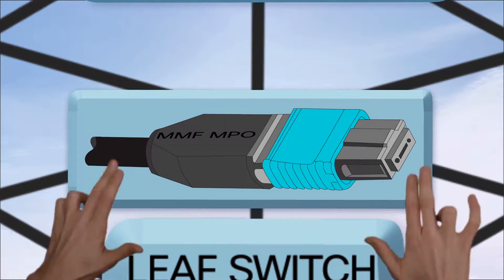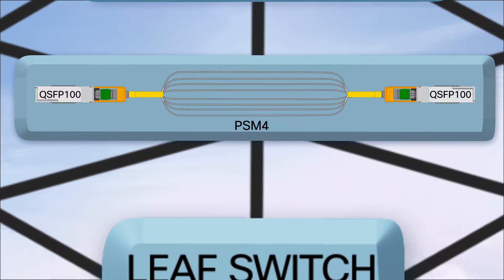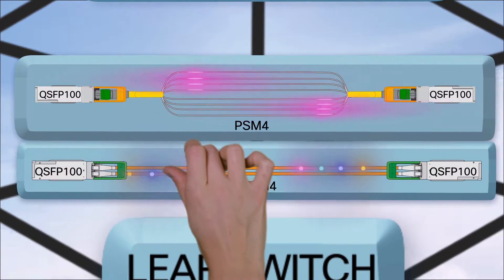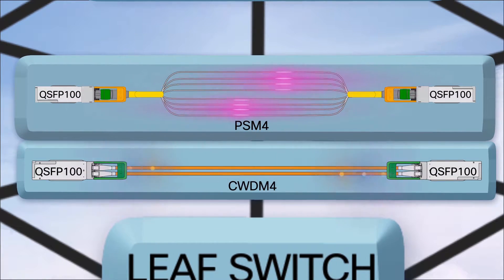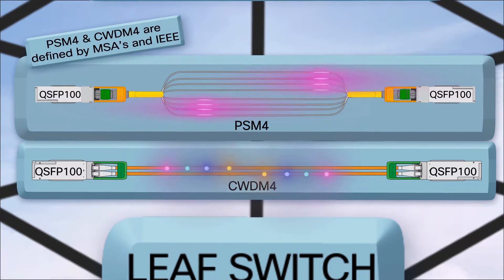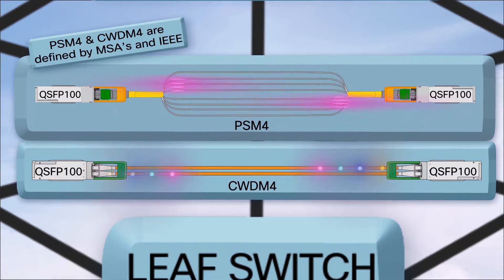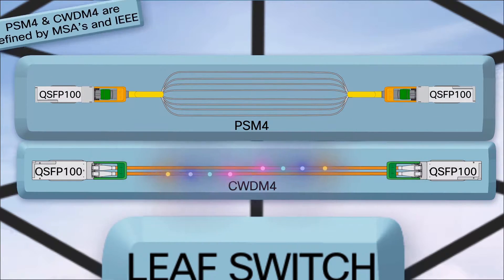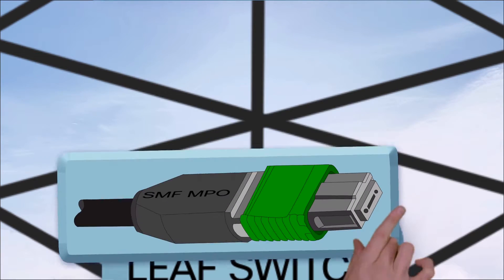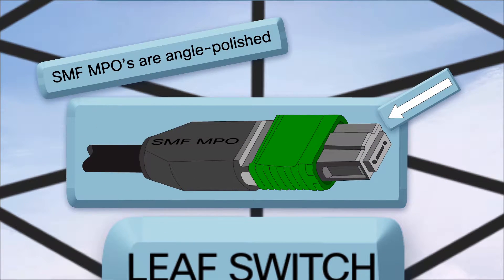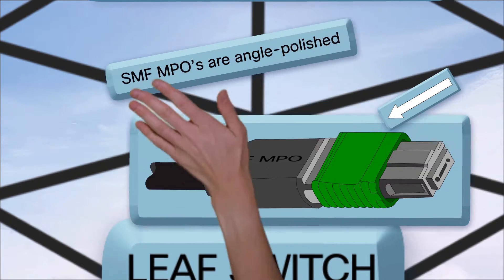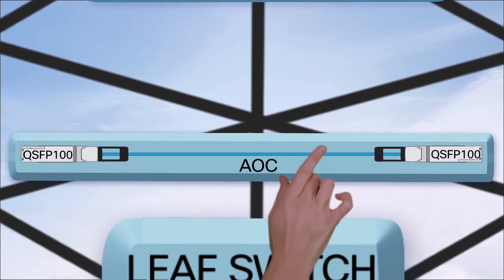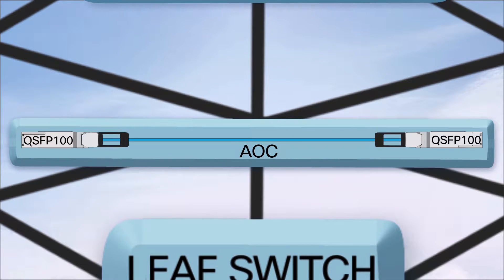For single-mode fiber, you can use PSM4 or CWDM4. PSM4 goes up to 500 meters and CWDM4 goes to 2 kilometers. Note that PSM4 is a parallel fiber format and uses SMF MPO connectors. If you only need 30 meters of reach, then don't worry about installing fiber — active optical cables will do the trick.